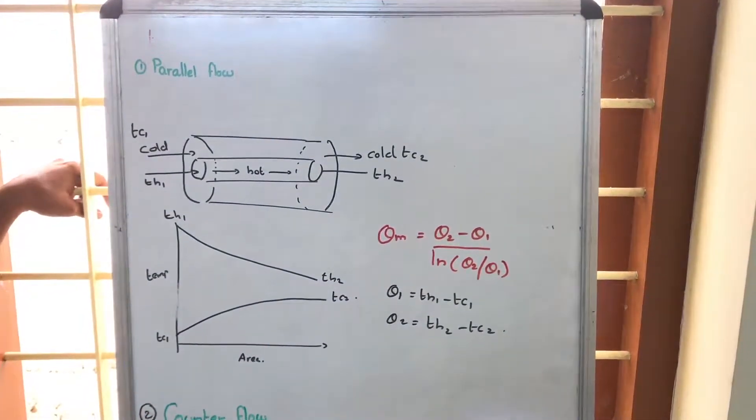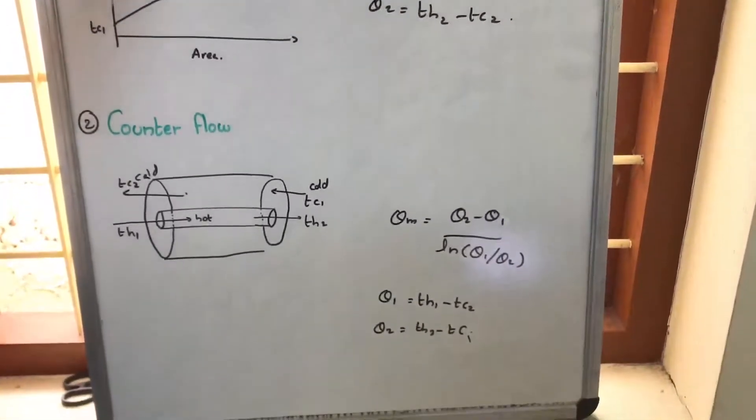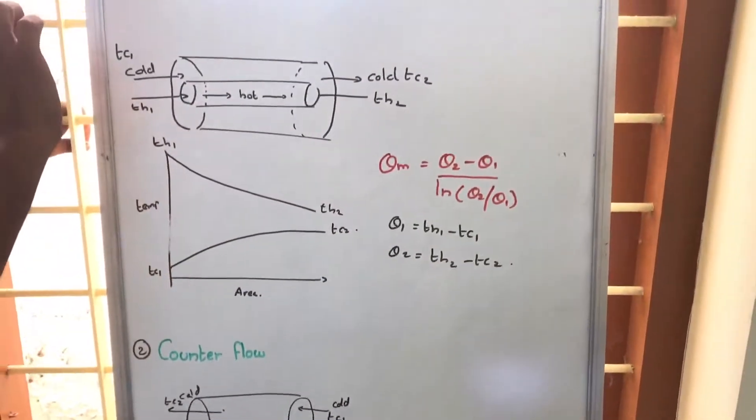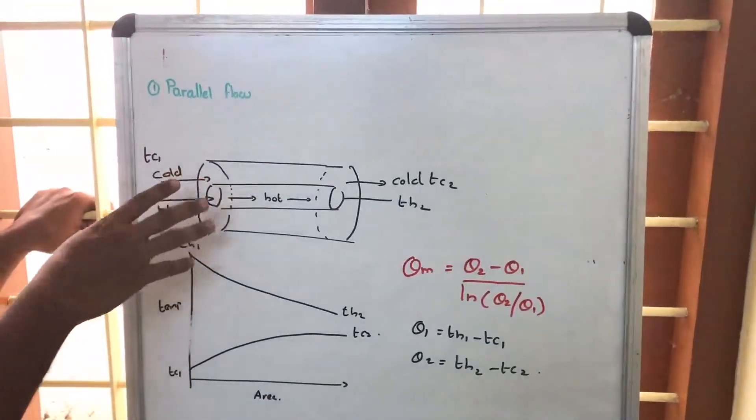So, the difference between parallel flow and counter flow heat exchanger: here this is a coaxial tube and hot fluid is passing through the inner tube and cold fluid is passing through the outer tube.